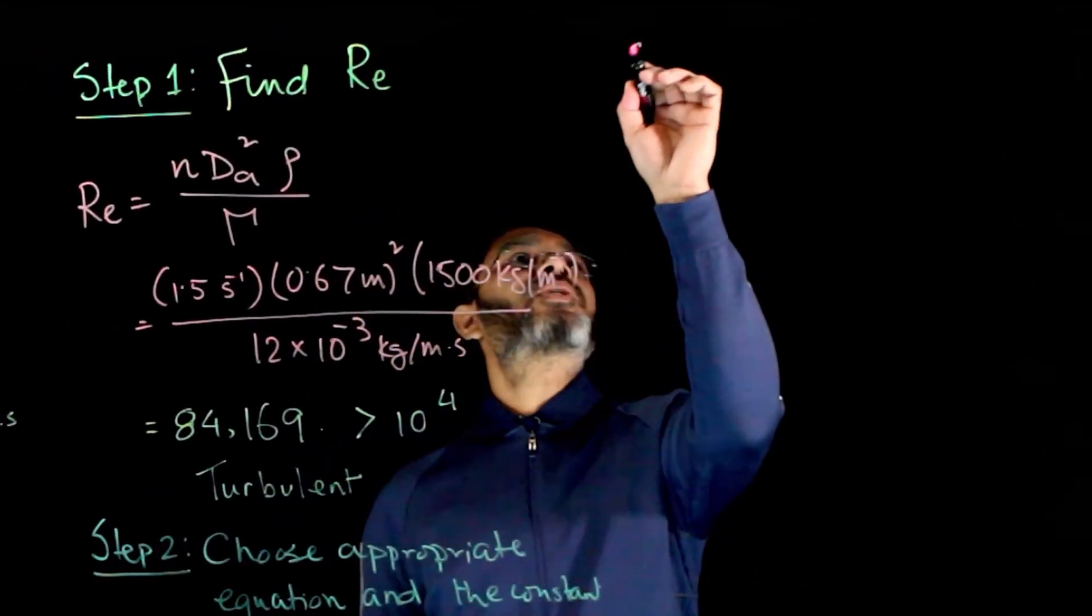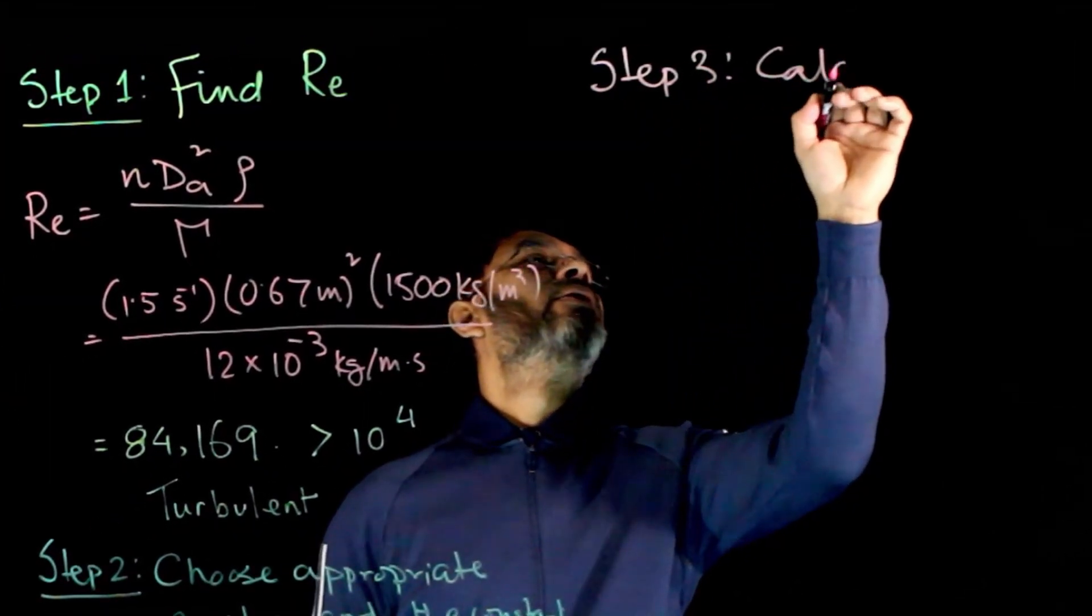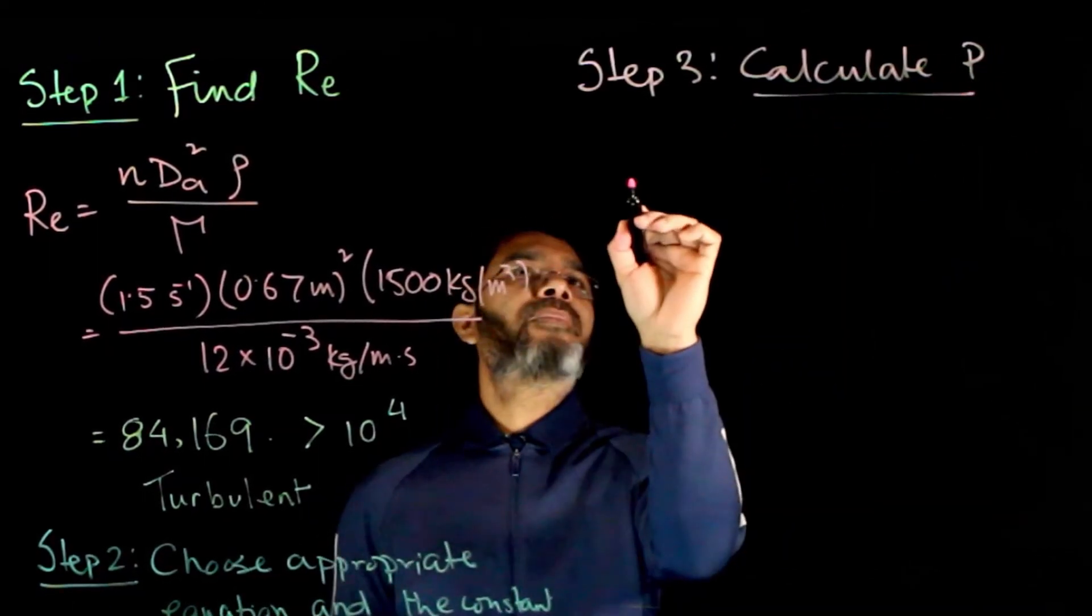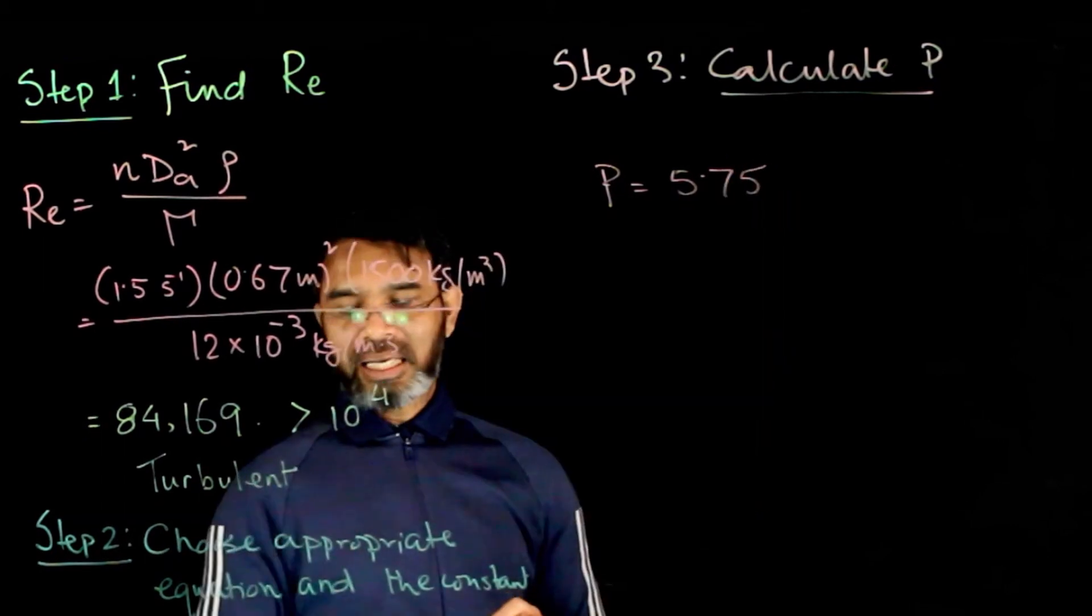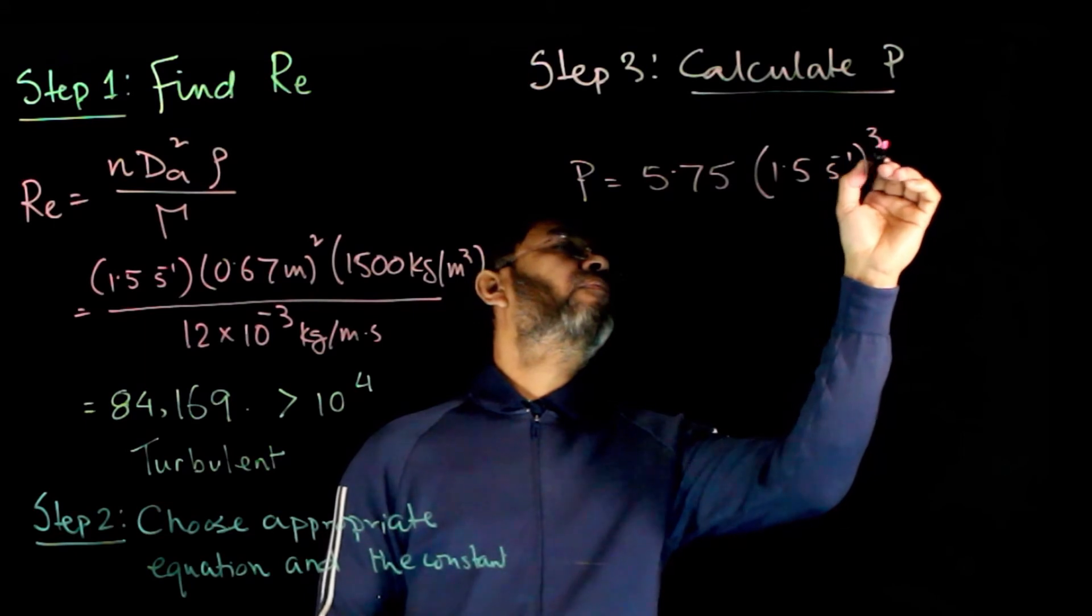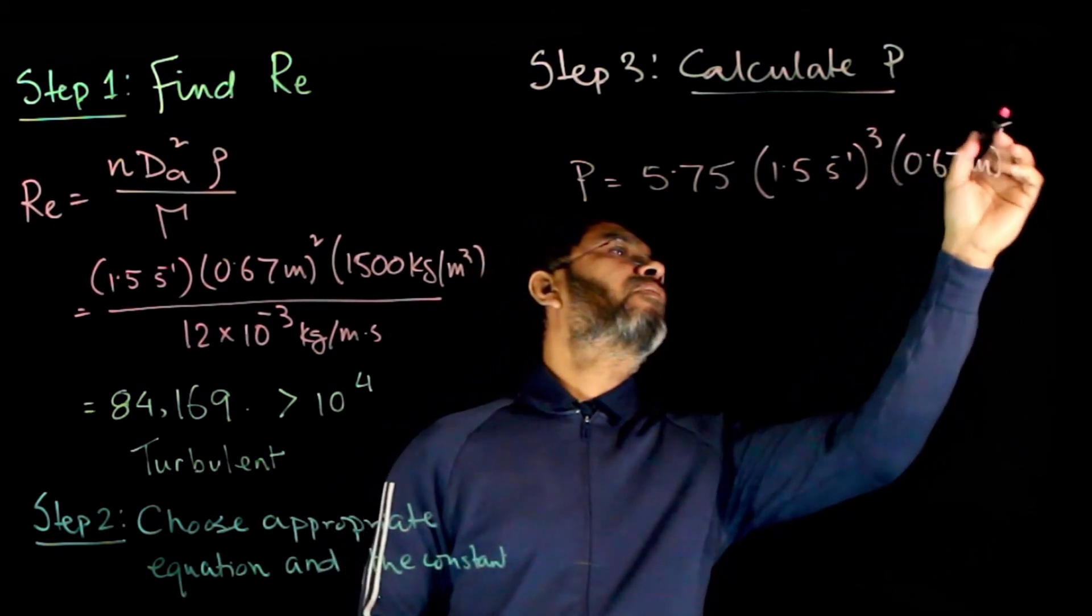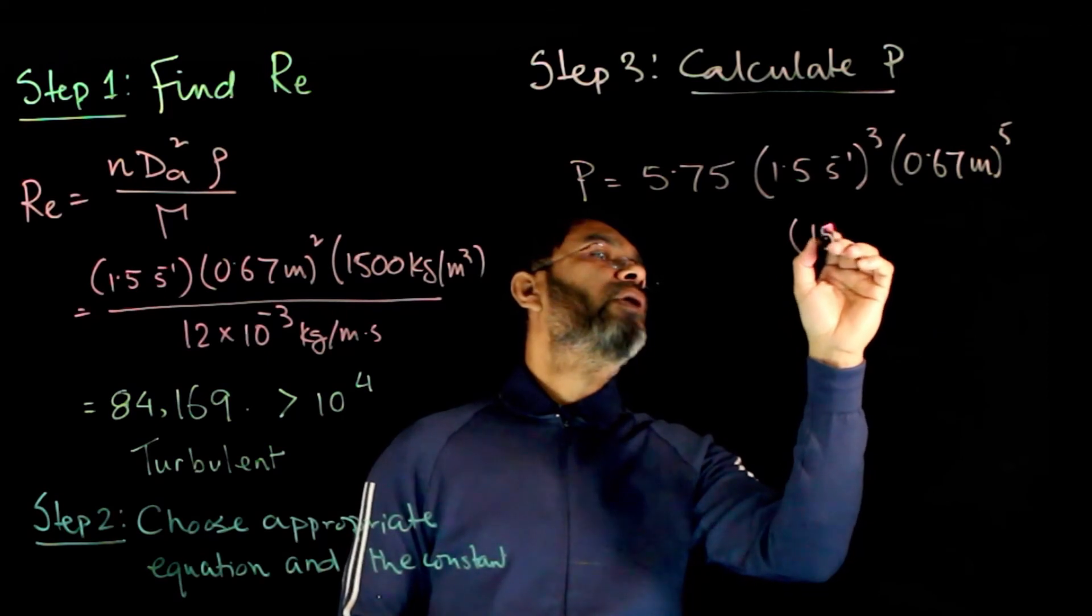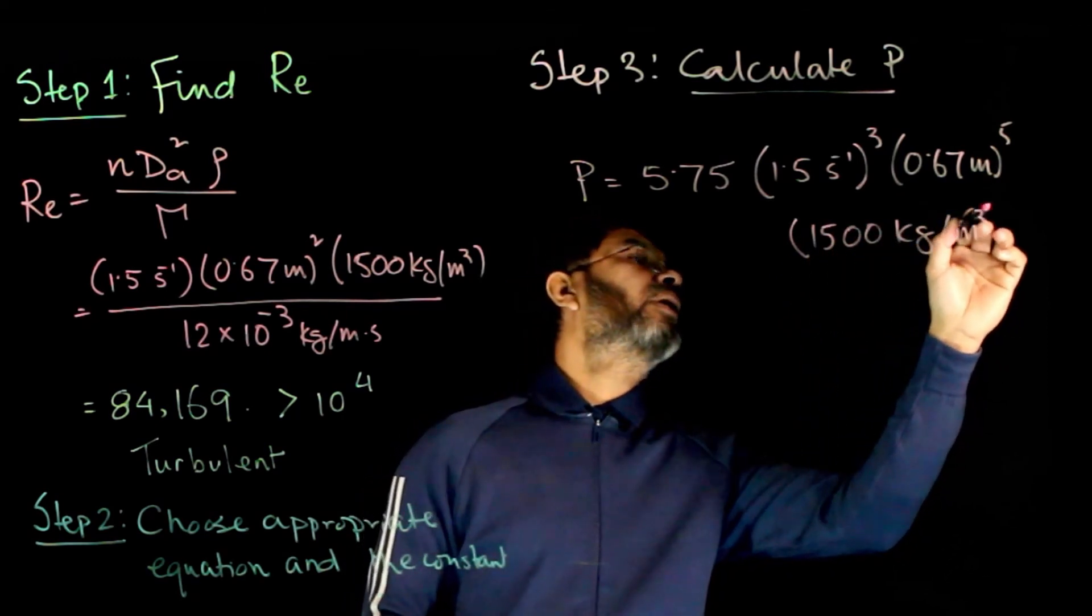The next step is simply to calculate P. We have P = 5.75 × N³, so that's (1.5)³ × (0.67 m)⁵ × ρ × 1500 kg/m³.